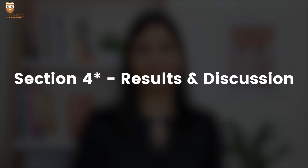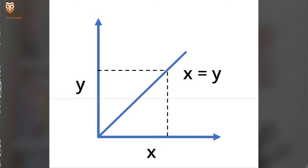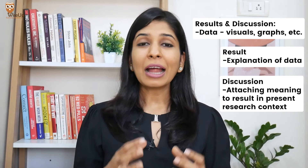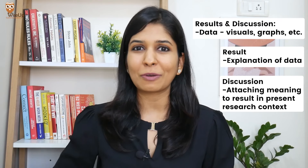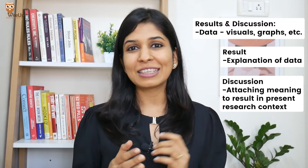The third section is the results and discussion section. The purpose of this section is to share the results and findings that helped us overcome the research gap. First we share the data, which can be in the form of visuals, charts, graphs, figures, or illustrations. Then we share the result — explaining what that data means. For example, if we have a graph of x equals y, the graph itself is the data, but when you say 'for every equal increase in x there is an equal increase in y,' you are attaching an explanation to what that data means — and that is called the result. Finally comes the discussion, where you attach meaning to that result in terms of the current research scenario and what it means for the research problem we are working on.